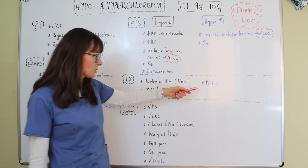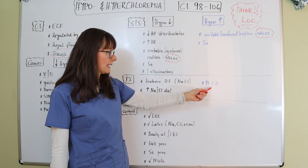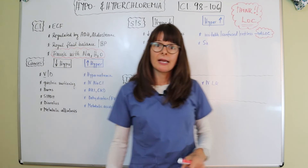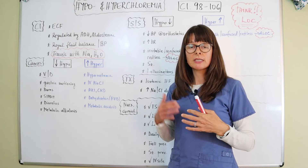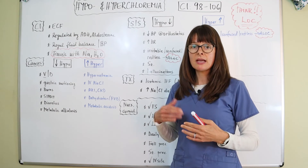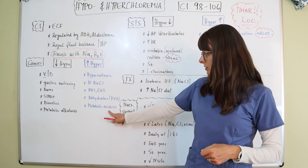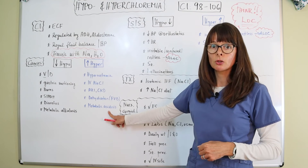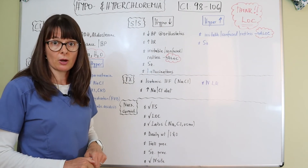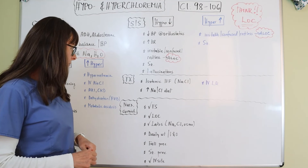So for hyperchloremia, we give IV Ringer's lactate, or lactated Ringer's, because it contains buffers. In addition to sodium and chloride, it contains other electrolytes as well as bicarbonate, which will help counteract the metabolic acidosis. Lactated Ringer's is a really good IV fluid to help patients with metabolic acidosis.